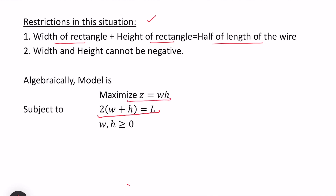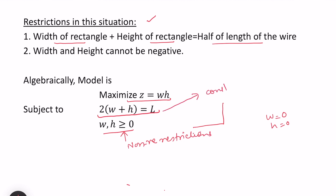The constraint is: twice the width plus twice the height equals L, i.e., width + height = L/2. We want to maximize the area, which is width × height. Width and height can never be negative — if either is zero, the area is zero, so we introduce non-negative restrictions. These non-negative restrictions and the constraint together form the mathematical model, where the area expression is the objective function and the perimeter equation is the constraint.